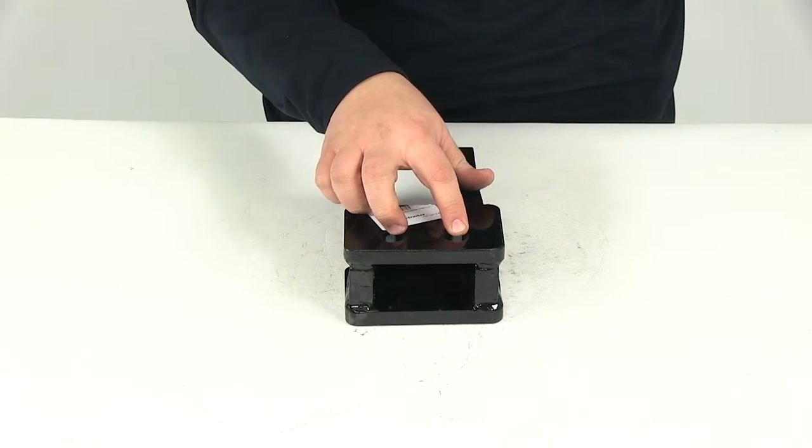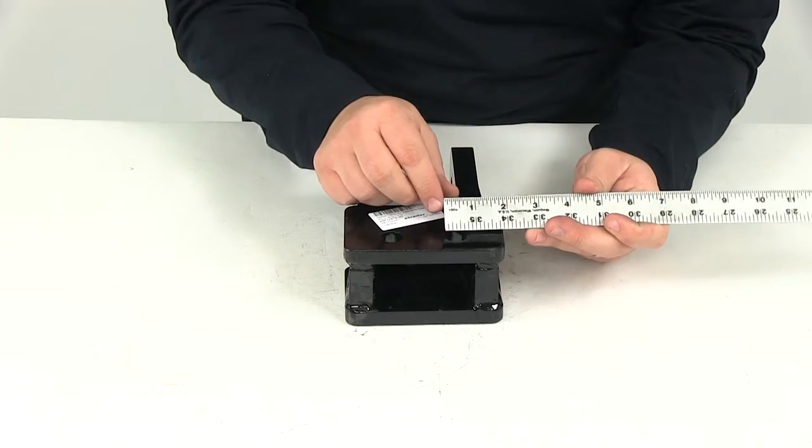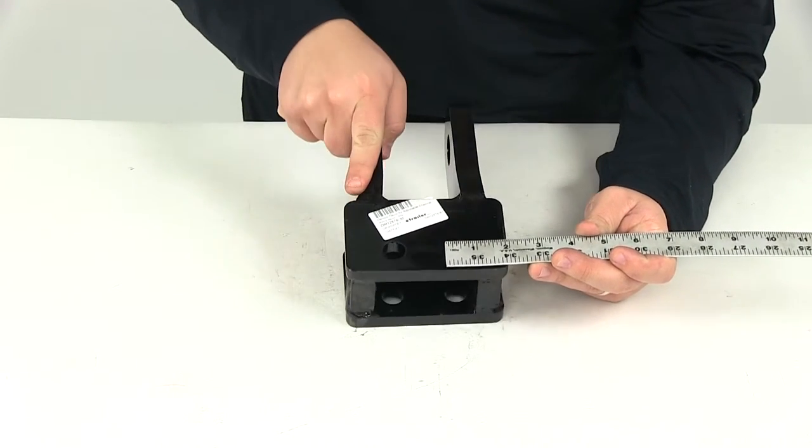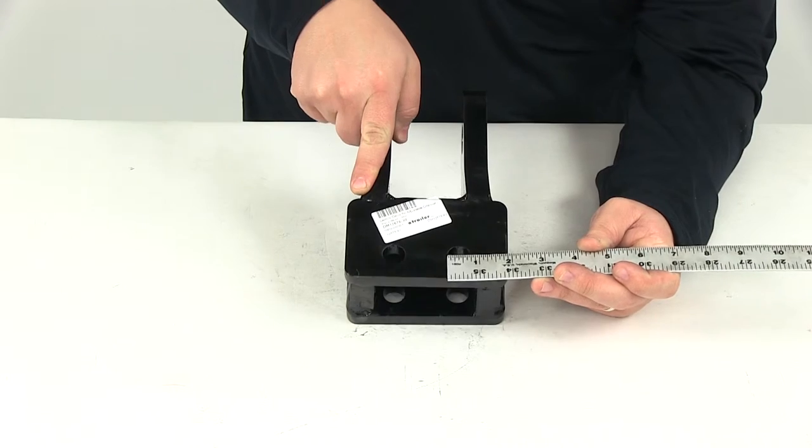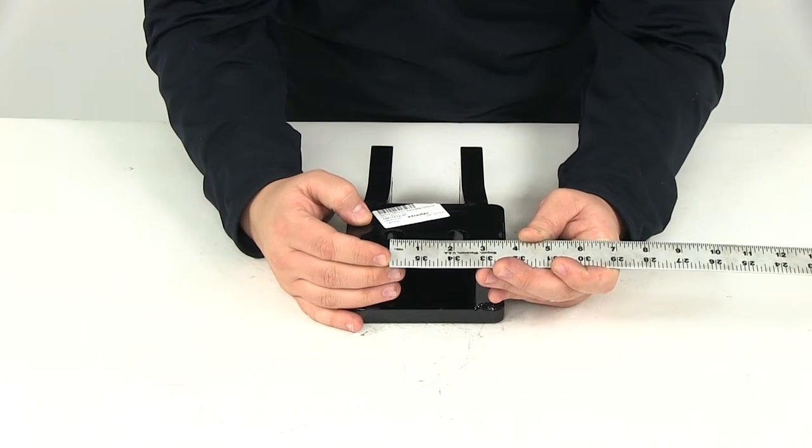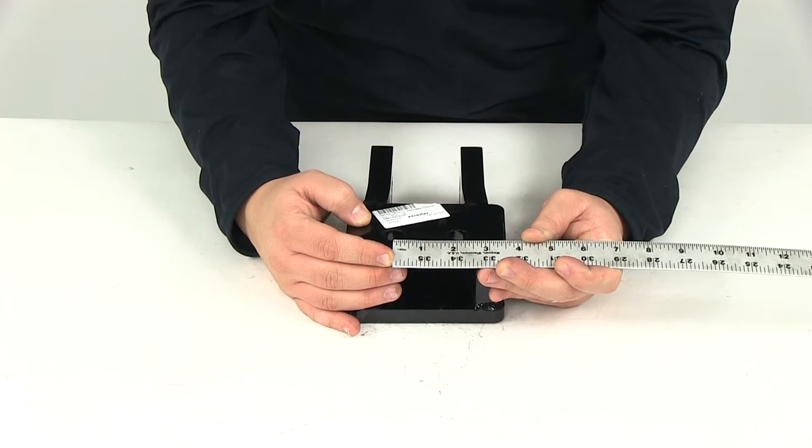The mount holes on this unit are going to give us a diameter of about five eighths of an inch, and they're going to be separated center on center by right on two inches.